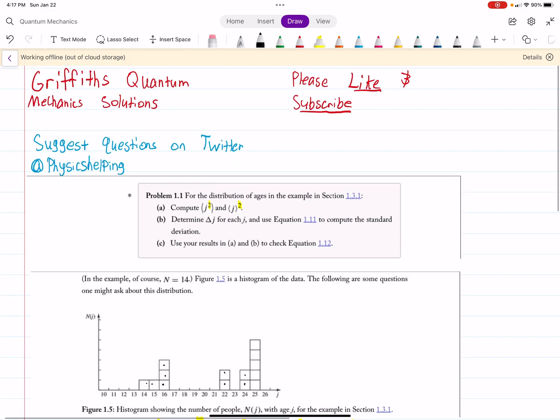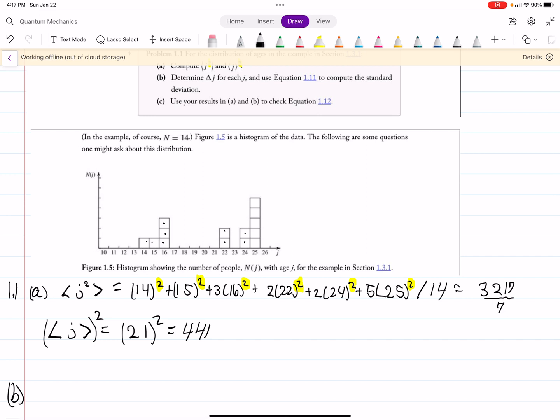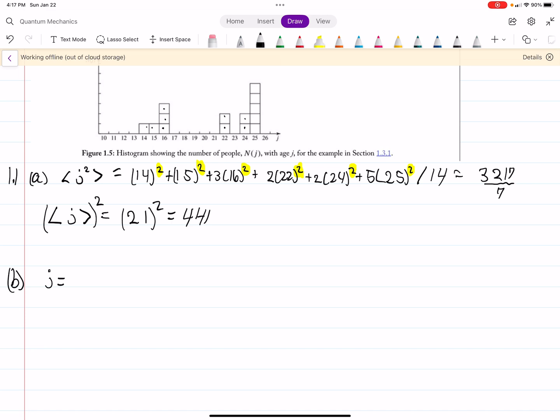Part B wants us to calculate delta J for each J, and then we'll compute a standard deviation. So for each J, which is 14, 15, I'm just listing out all the different Js, so all the different places where we have our data point. Then what we're going to have is delta J, which is equal to, let me actually have the textbook next to me here. Let me make sure I have it. Delta J is the expectation of J. I'm sorry, J minus the expectation value of J.